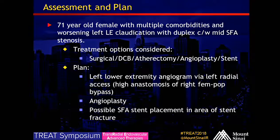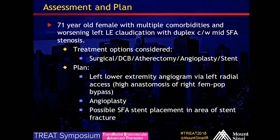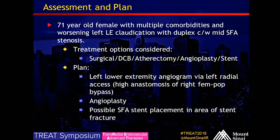Again, 71-year-old female with the mentioned comorbidities presenting with left lower extremity claudication and concern for mid-SFA in-stent restenosis. Options we considered were surgical bypass, DCB, atherectomy, angioplasty, and stent placement. We chose a left radial approach due to the right fem-pop bypass with the high anastomosis, making a radial approach ideal. The plan is at least angioplasty, and we'll see what else is needed.